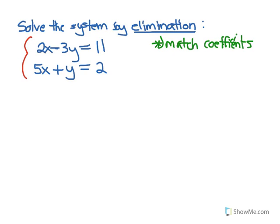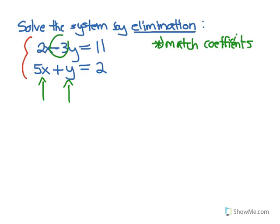When we say match coefficients, we want to look at our x's and y's from the two equations. The coefficient just means the number in front of the variable — it's multiplied to the variable. So in the first equation, 2 is the coefficient on x, and negative 3 is the coefficient on y.